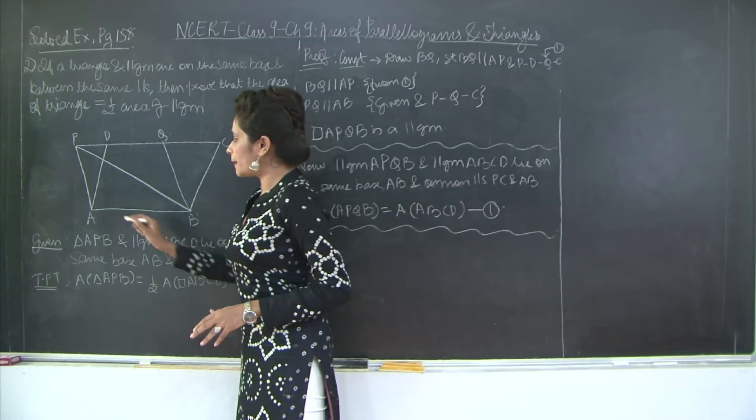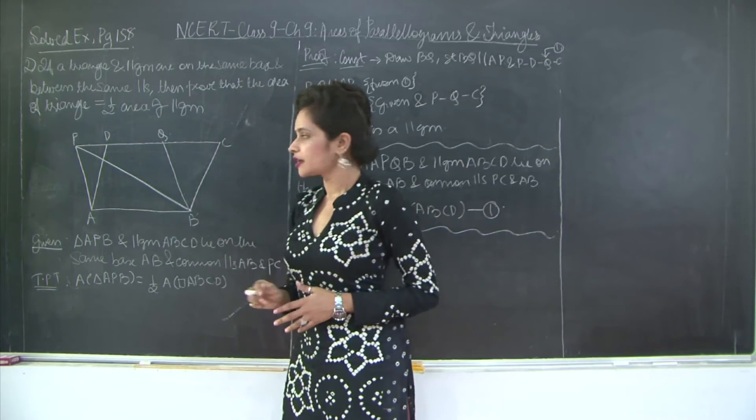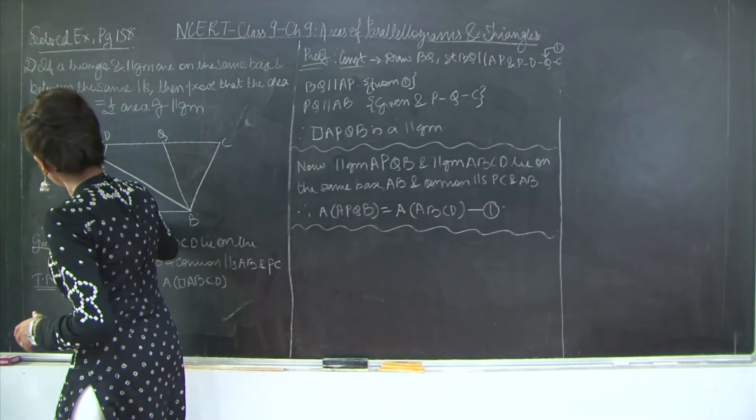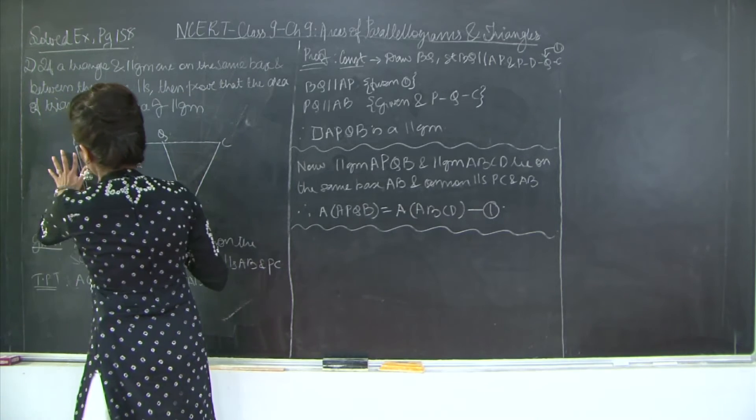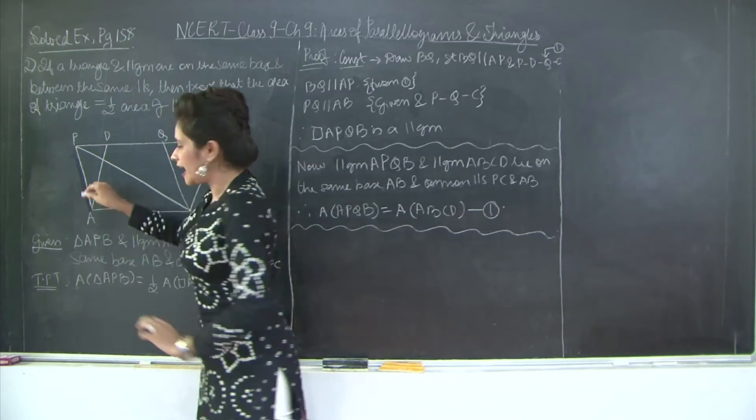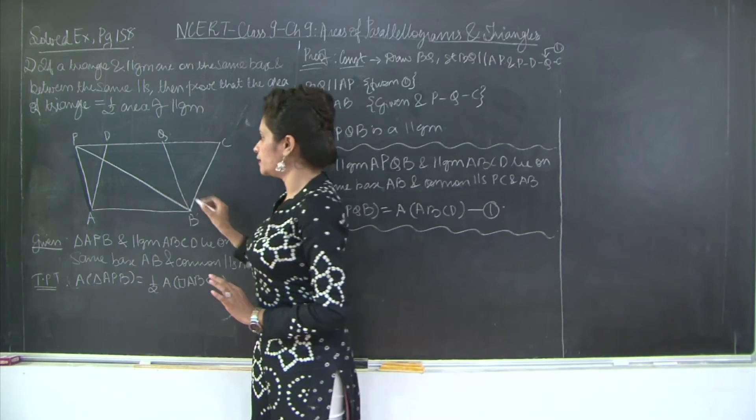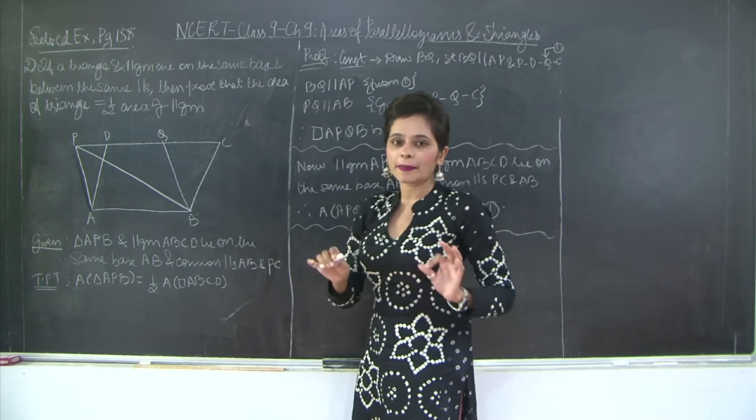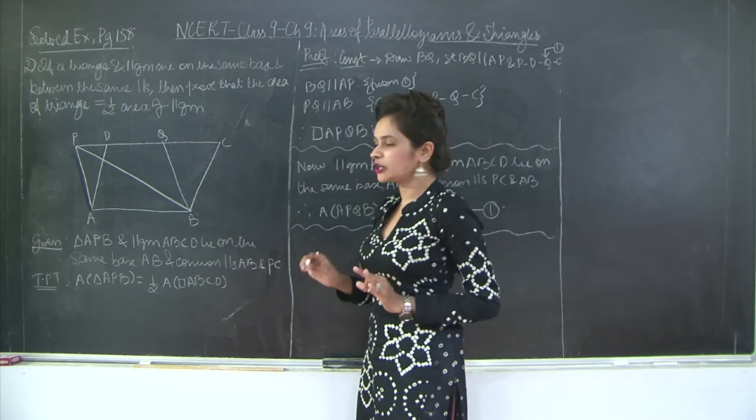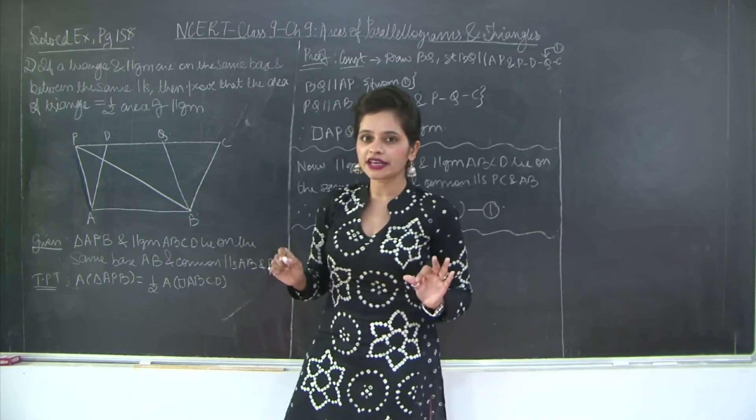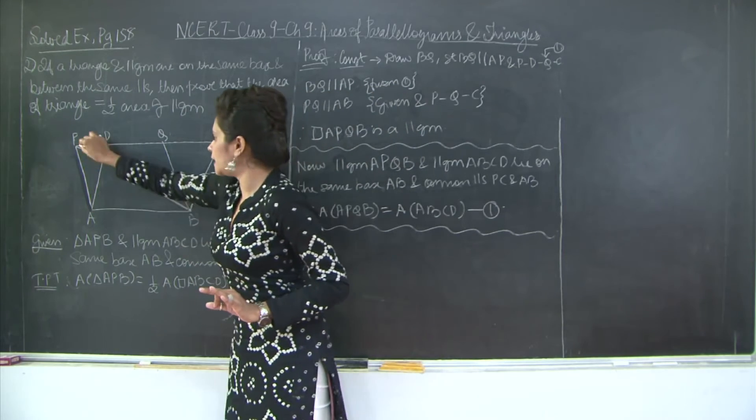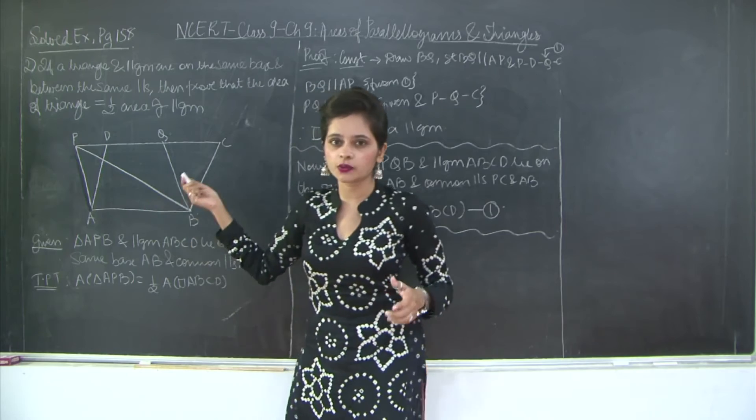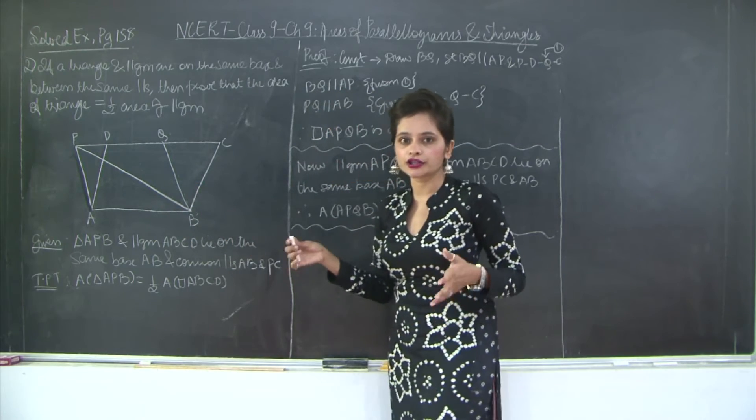Now let's move on to our parallelogram APQB. I have parallelogram APQB in which PB is the diagonal. What do we know about the diagonal of a parallelogram? That it divides it into 2 equal triangles. Therefore, my equal triangles are APB and QBP. Obviously, when they are equal or congruent triangles, their areas are going to be equal.